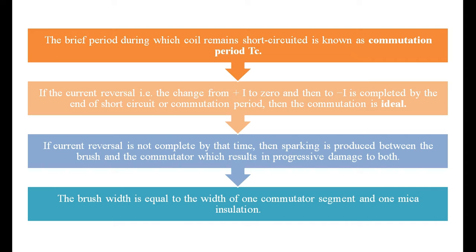If the current reversal - that is the change from plus I to zero and then raising to minus I - is completed by the end of the commutation period, then the commutation is ideal. If it is changing from plus I to minus I completely, it is called ideal commutation. If it is changing from plus I to less than minus I, it is called under commutation. For example, if it is changing from plus 5 amperes to minus 5 amperes, that is ideal commutation. Whereas if it is changing from plus 5 to minus 4.8 amperes, then it is under commutation.